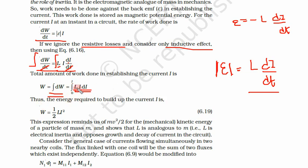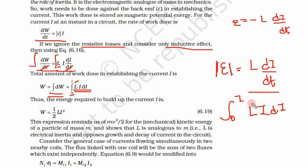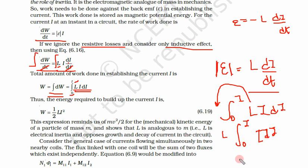We integrate from 0 to i — initially the current is zero and we increase it to i. The question is: how much work is done increasing current in a coil from 0 to i? Integrating W = ∫₀ⁱ L·i·di, since L is constant it comes out of the integral, giving L·∫₀ⁱ i·di. The integral of i·di is i²/2.